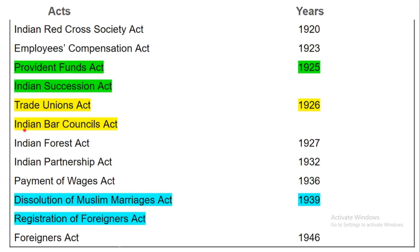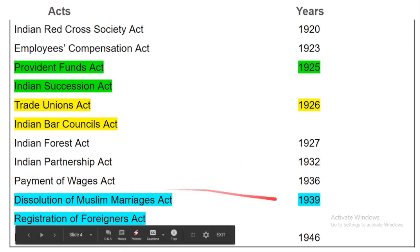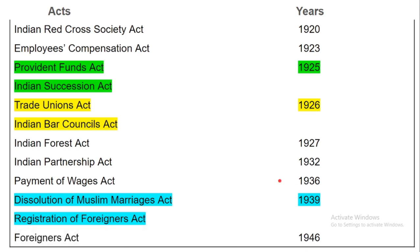Trade Union Act and Indian Bar Council Act were passed in 1926. Indian Forest Act was passed in 1927. Indian Partnership Act was passed in 1932. Payment of Wages Act was passed in 1936. Dissolution of Muslim Marriage Act and Restoration of Foreigners Act — these two acts passed in 1939. Foreigners Act was passed in 1946.